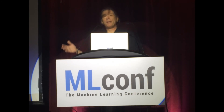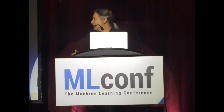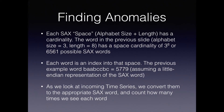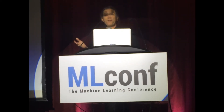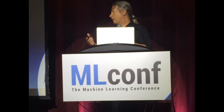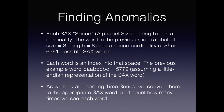To find an anomaly once you have SAX words, the basic idea is that each SAX word exists in a SAX space of fixed size. In our example, there are 6,561 possible SAX words. In an even distribution, you would expect a 1 in 6,561 probability of any SAX word occurring. Each SAX word is an index into that space, and by counting them, I have a notion of how rare or normal a particular SAX word might be.